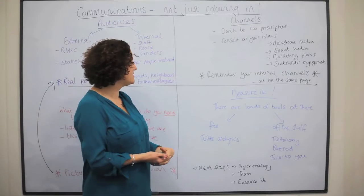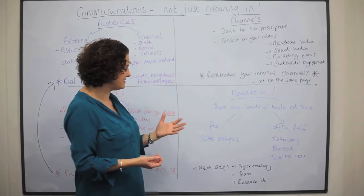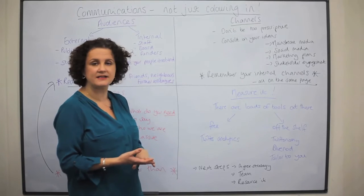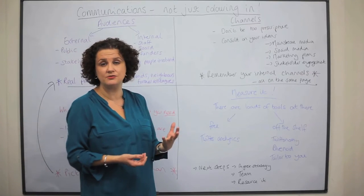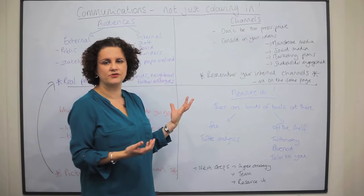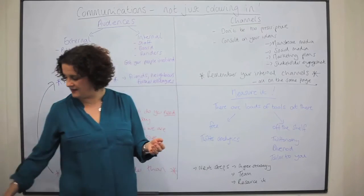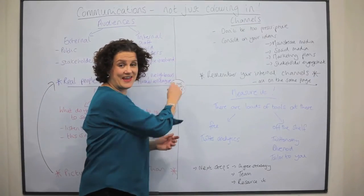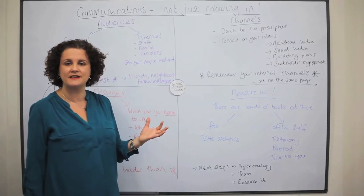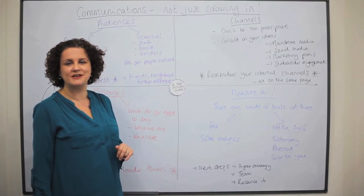Finally, you need to measure it. There are loads of tools out there — free tools on social media like Twitter Analytics, and off-the-shelf tools you can buy. You can subscribe to Twitonomy and Blue Nod, or get tools tailored to you and your organisation. Then the next step is to agree that strategy within your organisation, make sure you've got a team and resources to deliver it, and then do the actual work. Communications is a process that needs to be gone through effectively. You need a professional team to lead that for you — we're not just colouring in, we're delivering your communications and your objectives for you.